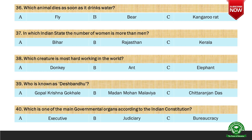Next question: Which is one of the main governmental organs according to the Indian constitution? Options are A. Executive, B. Judiciary, and C. Bureaucracy. And the right option is A. Executive.